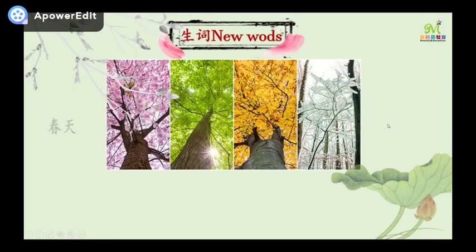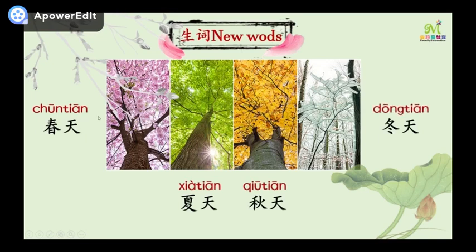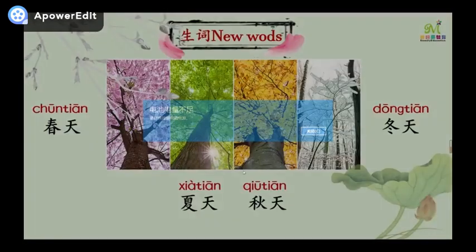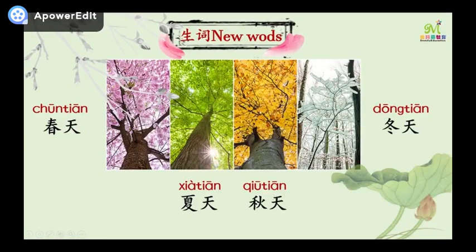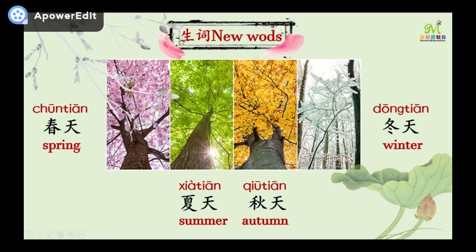Next, look at the four pictures. 春天，夏天，秋天，冬天. What are the words' meanings? 春天 means spring, 夏天 means summer, 秋天 means autumn, 冬天 means winter. Which season do you like? I like spring — 我喜欢春天. If I like summer: 我喜欢夏天. I like winter — 我喜欢冬天.